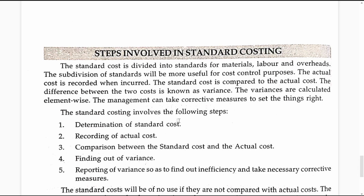With regard to materials, you can have material variances in the name of material cost variance, material price variance, material quantity variance, material mix variance and material yield variance. Similar classifications can be found under the head of labour and overhead.